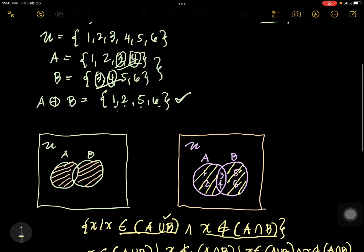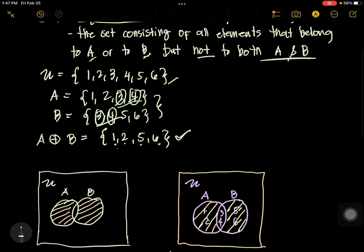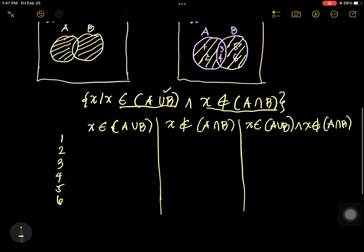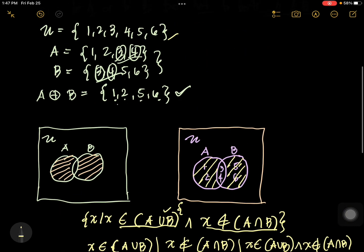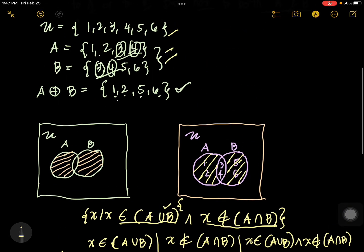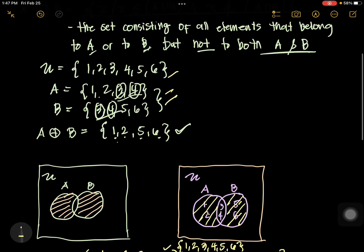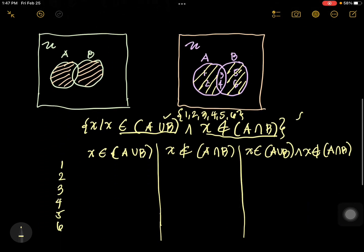Let us check all elements: 1, 2, 3, 4, 5, 6. Let us define first A union B. If you unite A and B, you get 1, 2, 3, 4, 5, 6. And what is A intersection B? It's 3, 4. So you have the intersection, the common elements, which are 3 and 4.